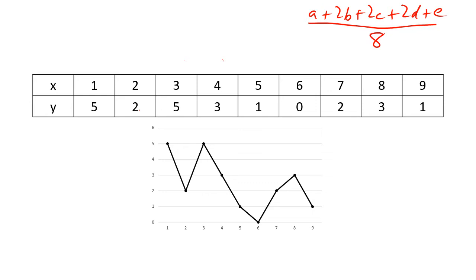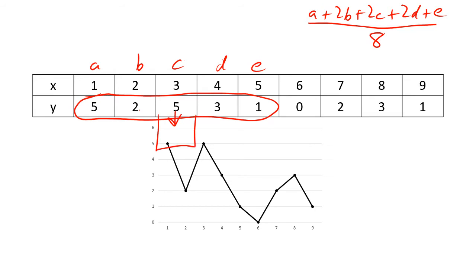So this is our a, b, c, d, e, and this is our group of five centered on the middle value. We just remember to double some of the numbers, so it's: 5 + (2×2) + (2×5) + (2×3) + 1. That gives us 5 + 4 + 10 + 6 + 1. If you add all that up and divide by 8, you get about 3.25 — we'll call that 3.